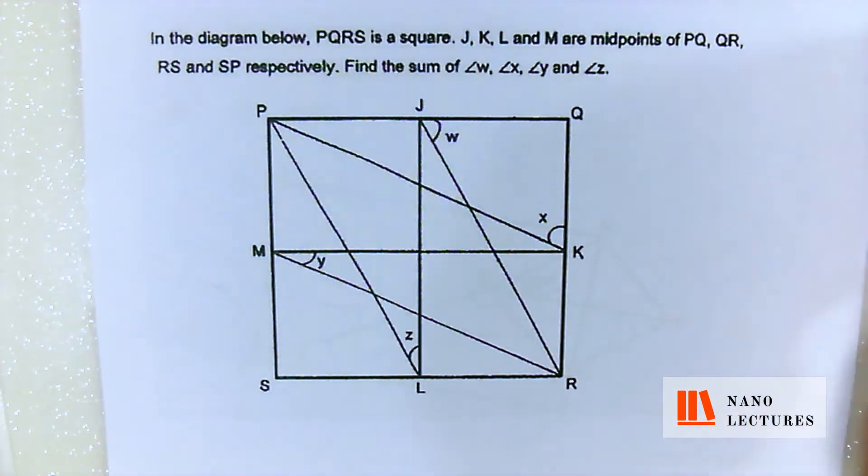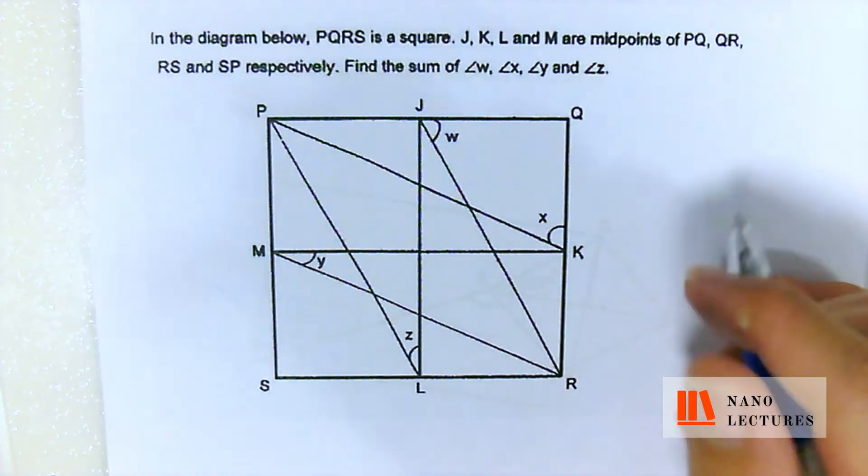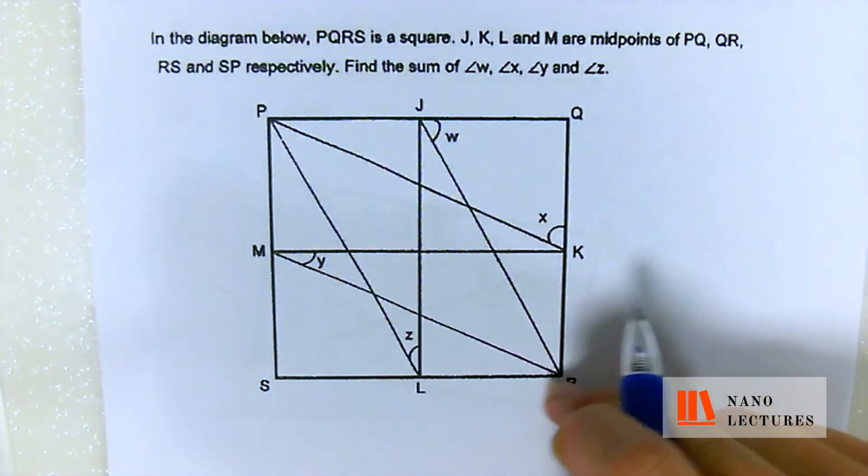Many students get this wrong because they get very panicky after looking at this. Now, I'm going to tell you how to do this. They say that PQRS is actually a square.